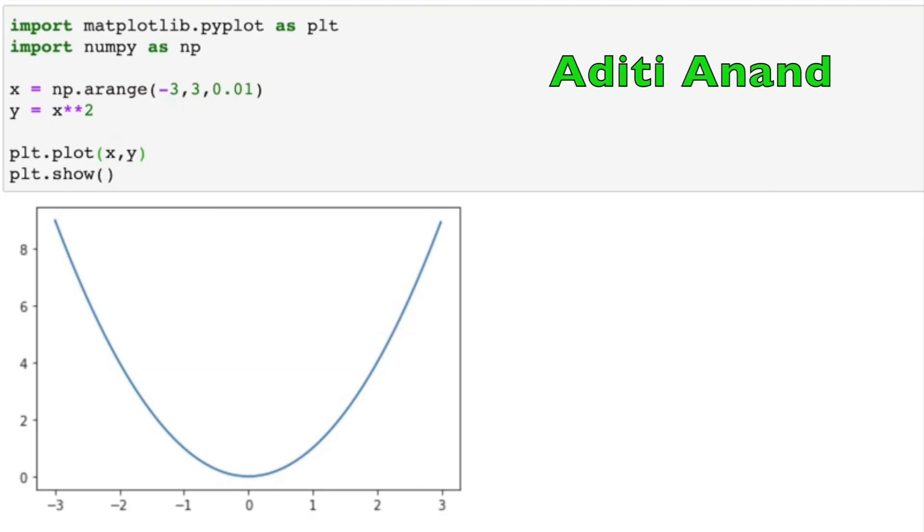First, we start with importing matplotlib.pyplot as plt, as well as numpy as np. This is because we will use numpy to create a range of values for x with the function np.arange. This plots x values from negative 3 to 3 with steps of 0.01.